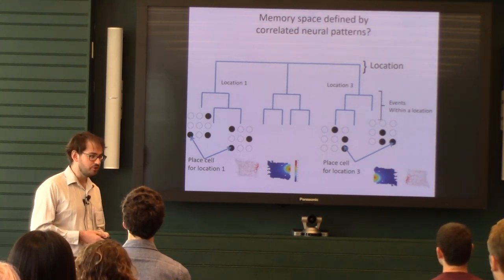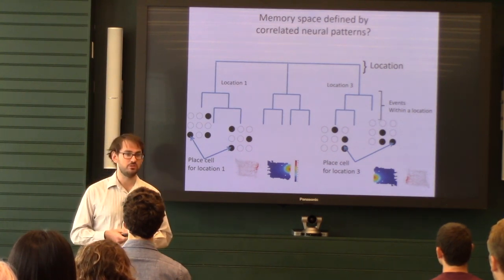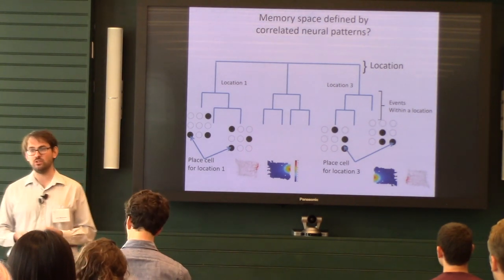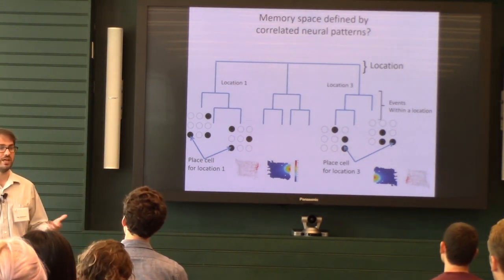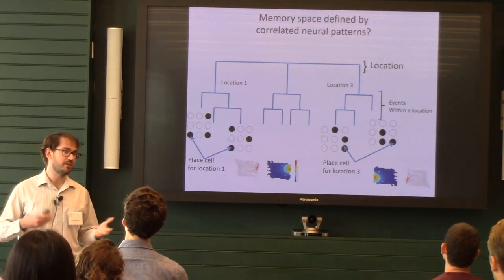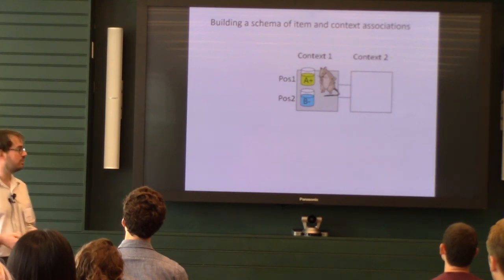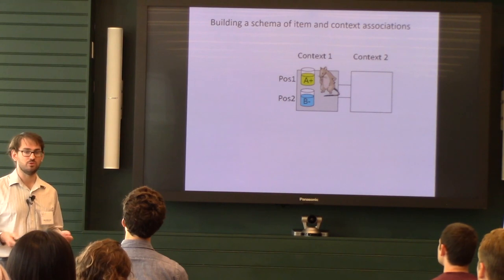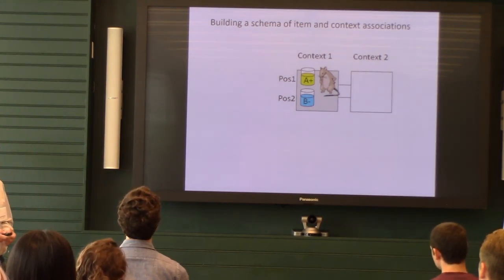At least when we introspect, it seems like we can organize our experiences along many other different kinds of dimensions. When I was working with Howard, I wanted to design a task in which animals had multiple different kinds of dimensions with which they had to organize information. We could then assess the neural firing patterns and how they reflected each of these dimensions at once. I wanted to describe what the data and the task looked like in more detail, because a number of people have decided to look at this dataset during this course.